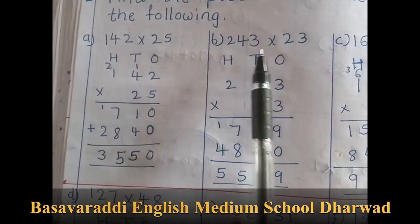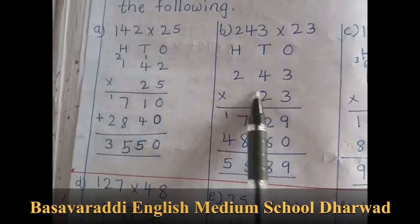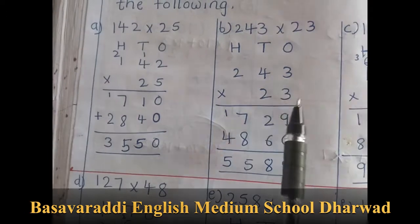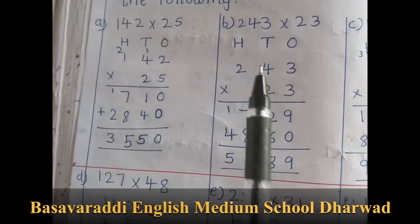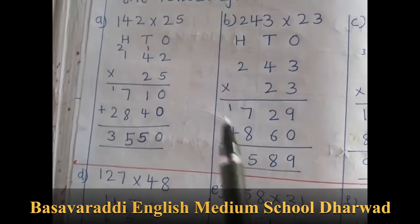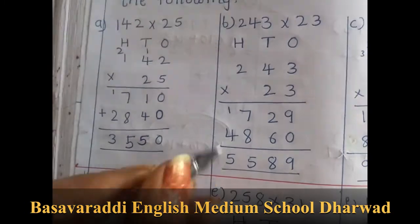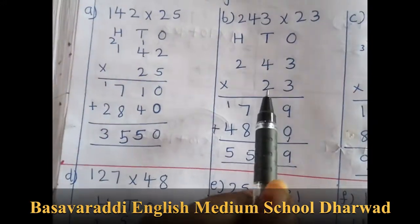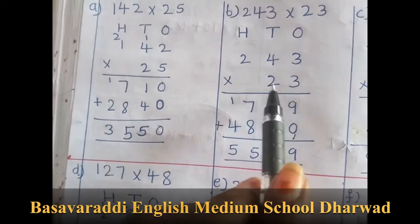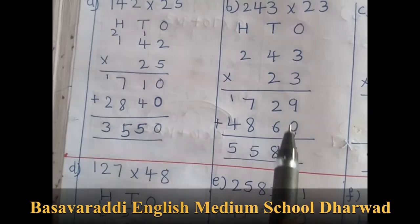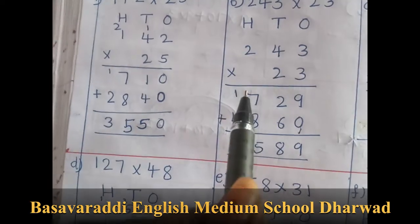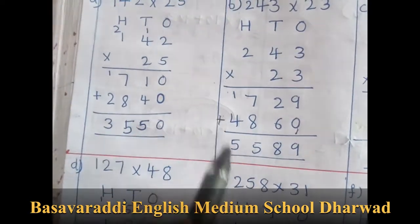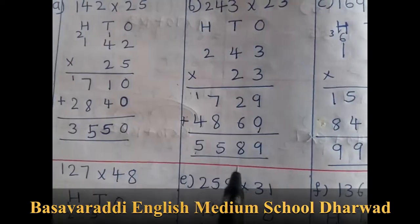Now 243 into 23. So 3 times 3 is 9, 3 times 4 is 12, and 3 times 2 is 6. Then moving to tens place, putting 0. 2 times 3 is 6, 2 times 4 is 8, 2 times 2 is 4. So 9 plus 0 is 9, 2 plus 6 is 8, 7 plus 8 is 15, 1 is carry over, 1 plus 4 is 5. So the answer is 5589.